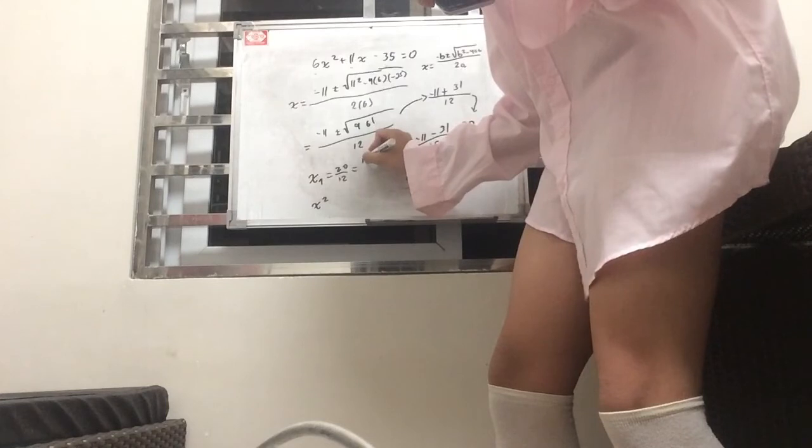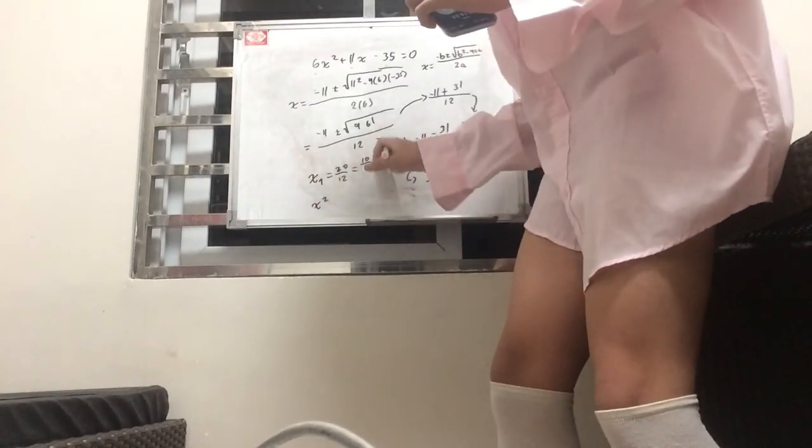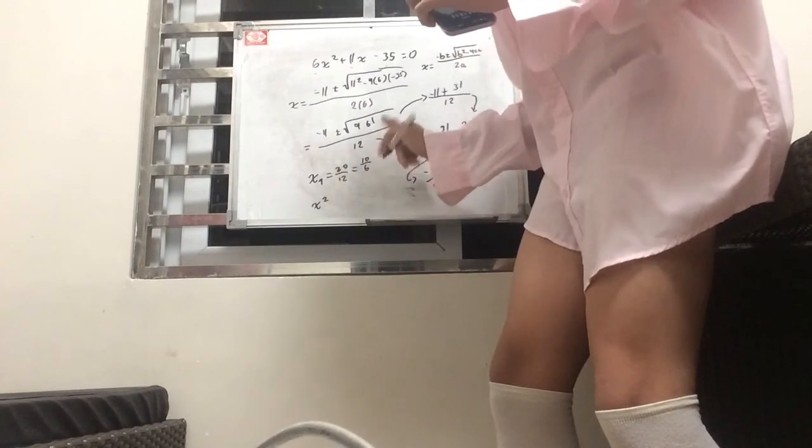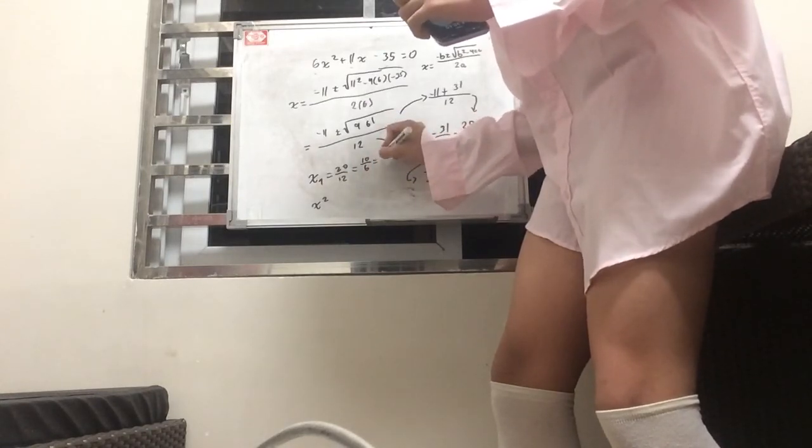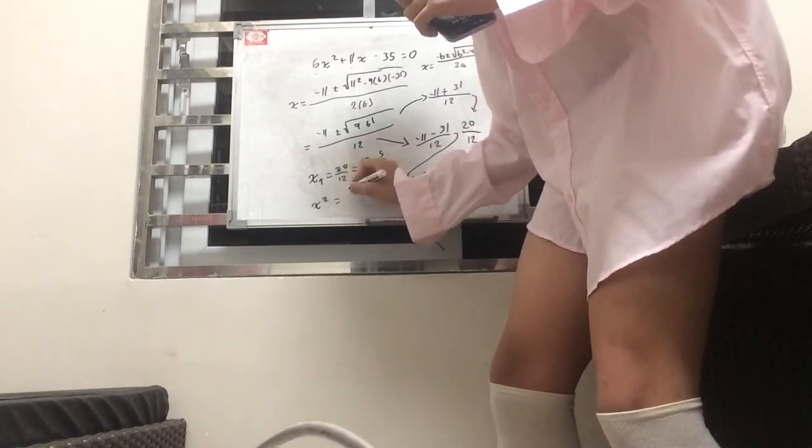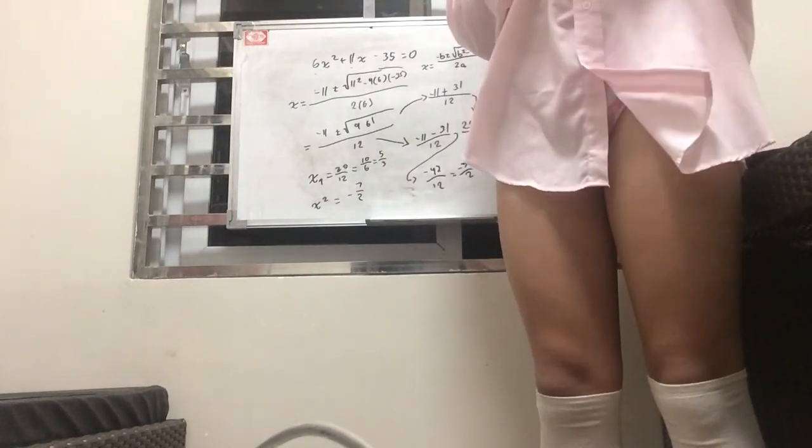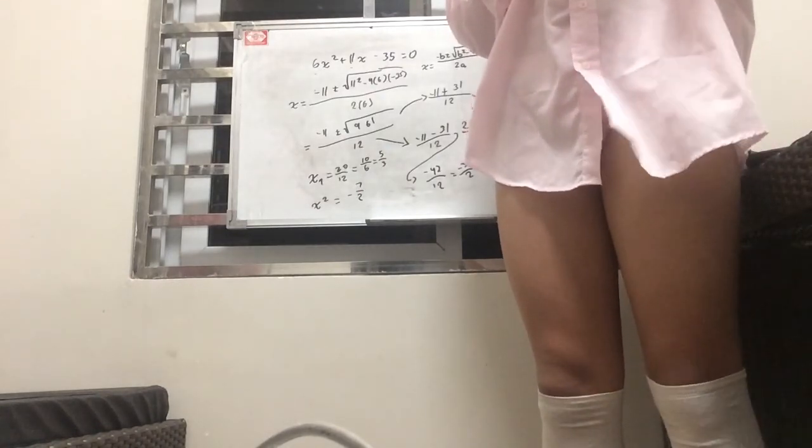So, these are gonna be our two answers, our two sets of x. So, x1 would be 20 over 12. And x sub 2. Well, actually, we could simplify that further to 10 over 6. And I think that's not simplifiable. Actually, we can simplify that further. So, that would be 5 over 3. And negative 7 over 2. So, that would be it.